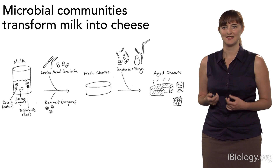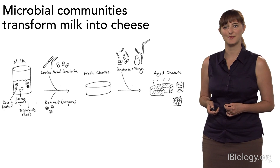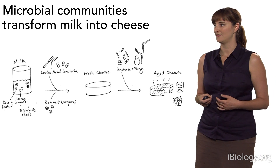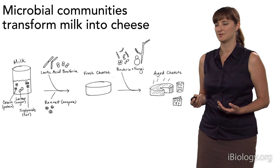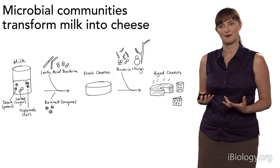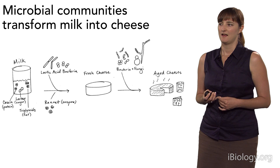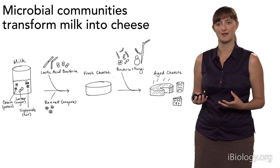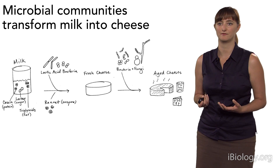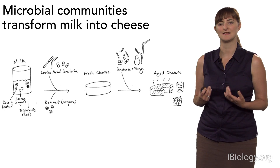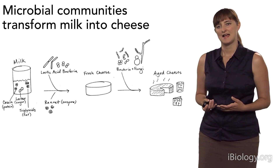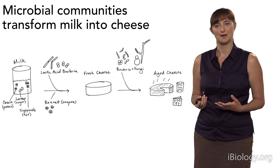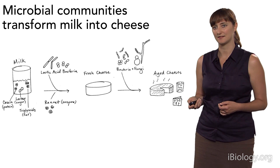The second stage, which I think is the most interesting part of cheesemaking, is the secondary stage: the aging of the cheese. Initially you have the lactic acid bacteria growing and fresh cheese formed, which basically just tastes a little bit like sour milk. You can take this cheese and age it, and depending on how you age it, you get many different kinds of aged cheeses with different aromas, flavors, textures, and appearances.